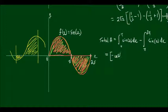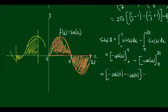And that's going to give us negative cos(x) bounded by π and 0 minus negative cos(x) bounded by 2π and π. And substituting in my values I shall get minus cos(π) minus negative cos(0), minus cos(2π) minus negative cos(π).